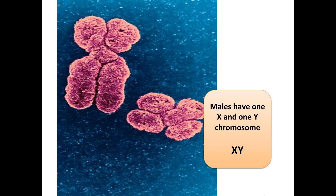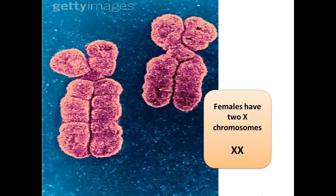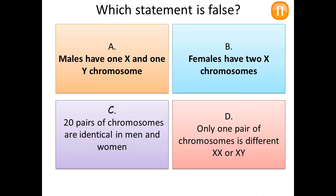Here is a picture of how the X and Y chromosomes look under a microscope. In this case we are looking at a human being with a biological male gender, so you can see the X and Y chromosomes. This other image shows XX chromosomes, meaning this human being has a biological female gender.